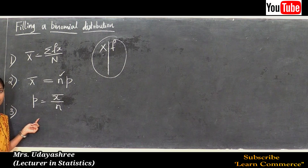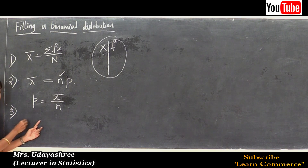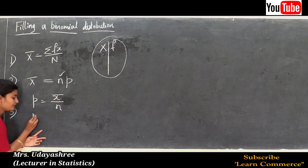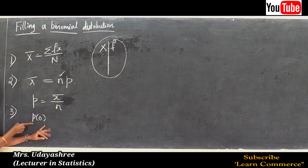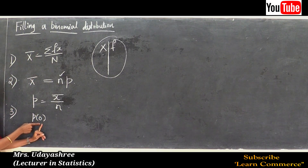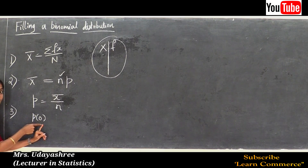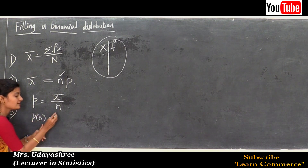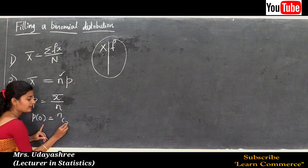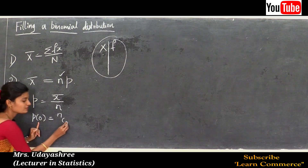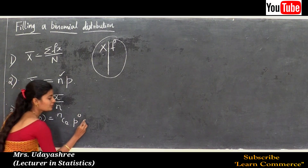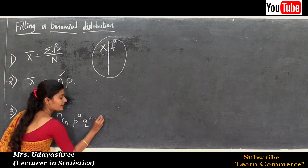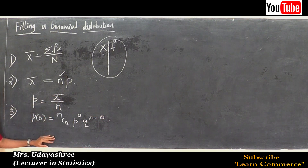Step 3 is to find the first term of the probability distribution. Since this is a binomial distribution, the first term corresponds to x = 0, giving: P(0) = nC0 · p⁰ · q^(n−0).